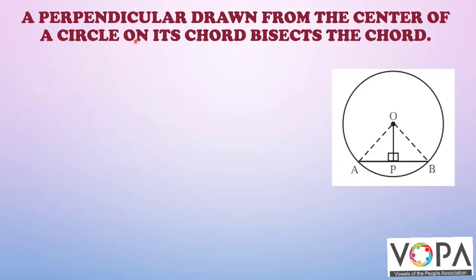So a perpendicular — you can see this is a perpendicular drawn from the center of a circle on its chord. AB is the chord; it will bisect the chord, that is, it will divide the chord into two equal parts. So now we are going to prove this.